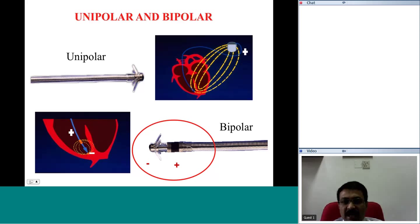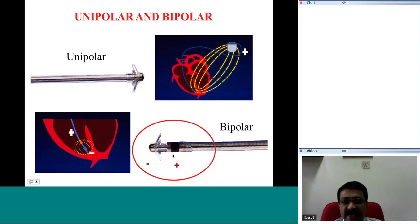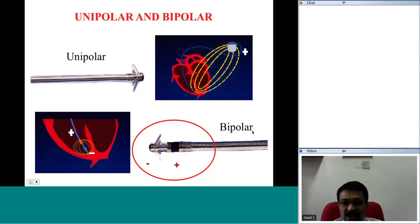A bipolar lead has the capacity to be programmed as a unipolar in case one of the electrodes or circuitry is damaged. When the physician thinks a lead is not functioning properly and it is not wise to replace the lead, the bipolar lead in clinical practice today can be converted to a unipolar lead — but it has its own disadvantages.